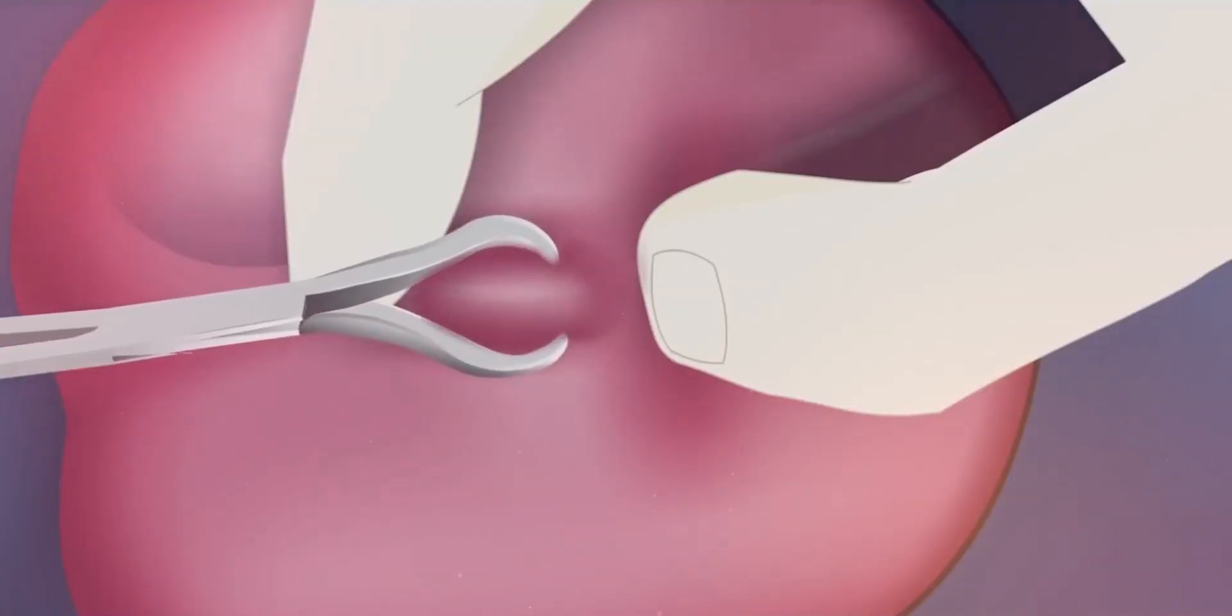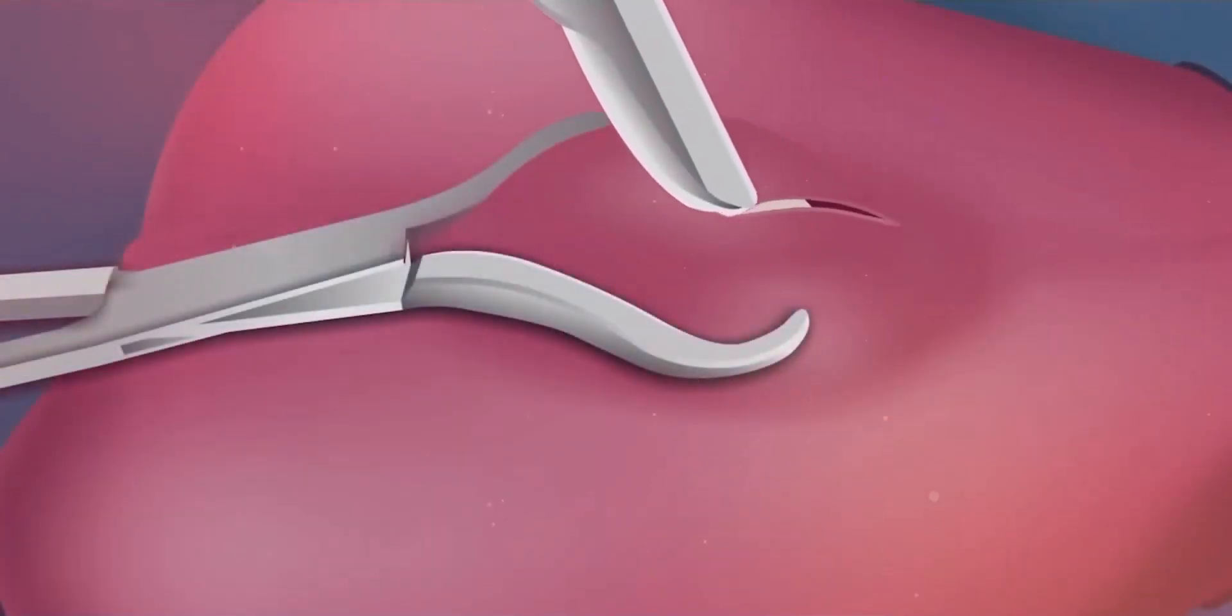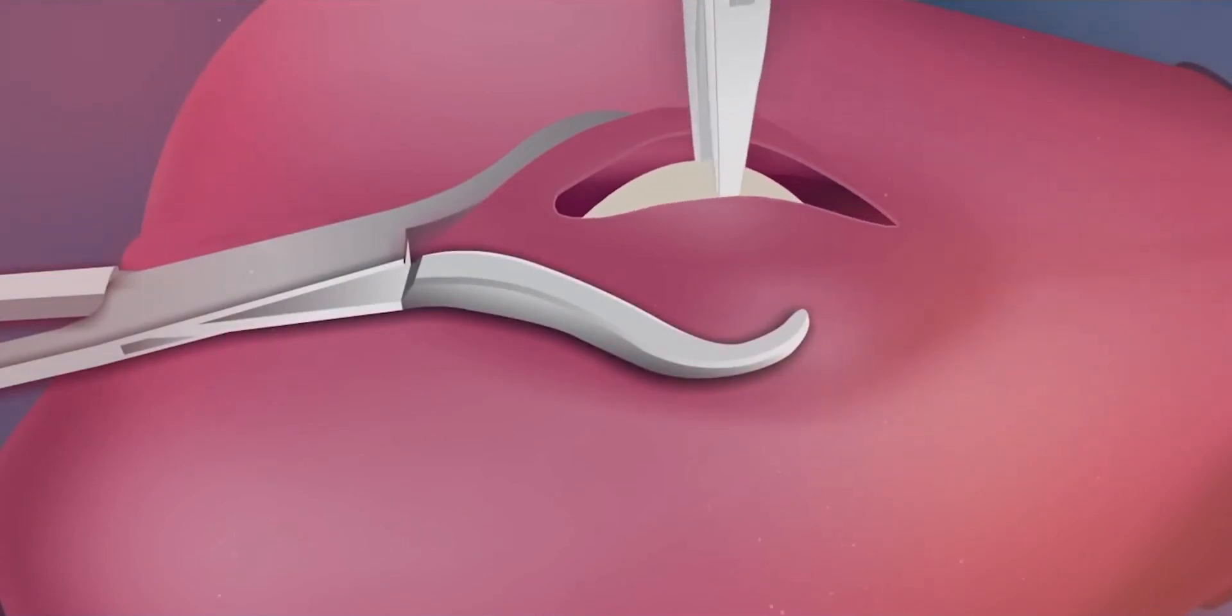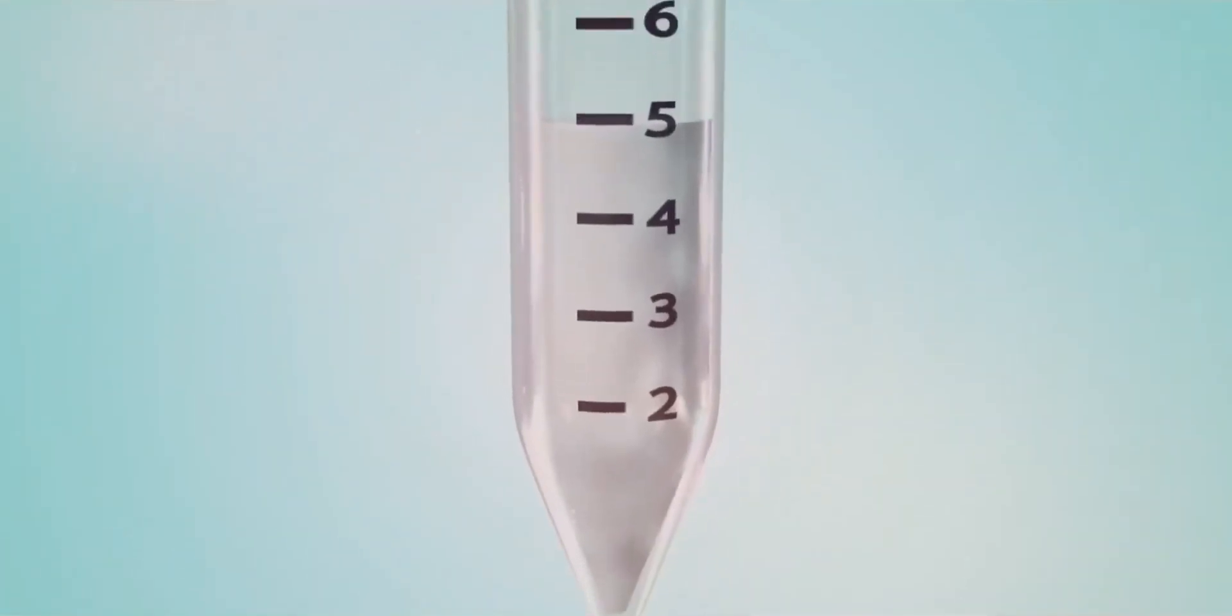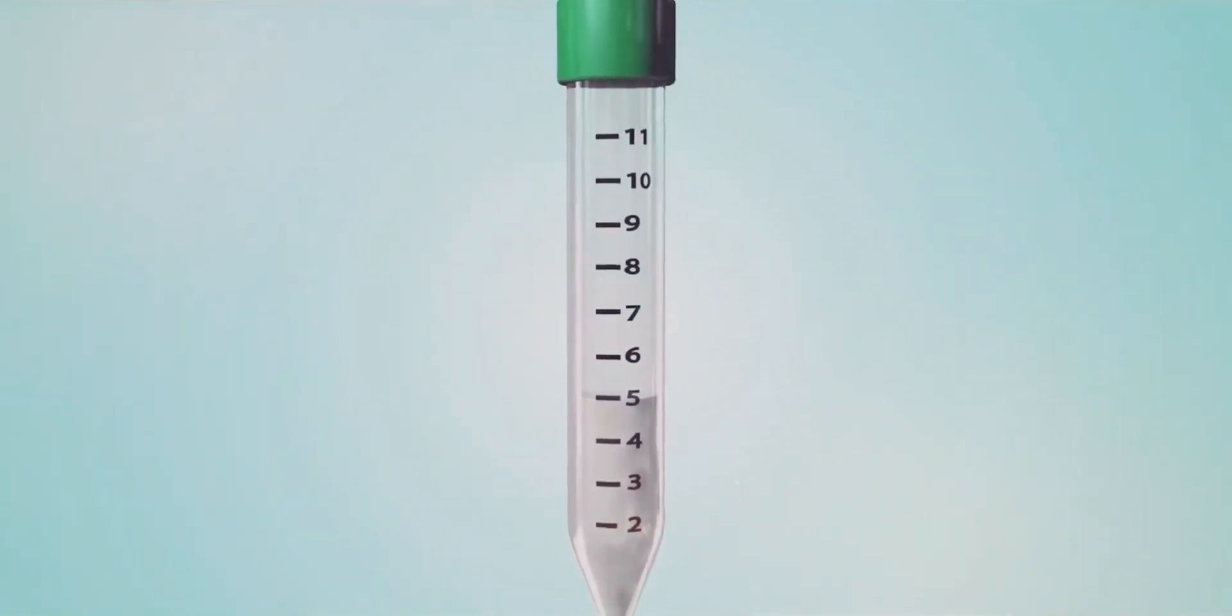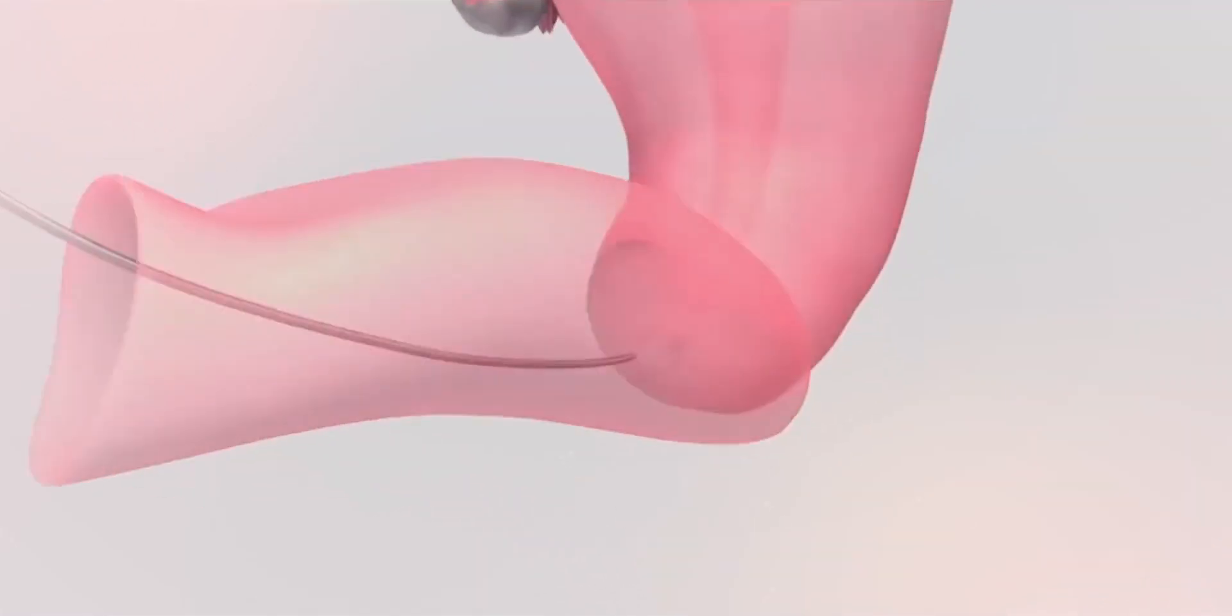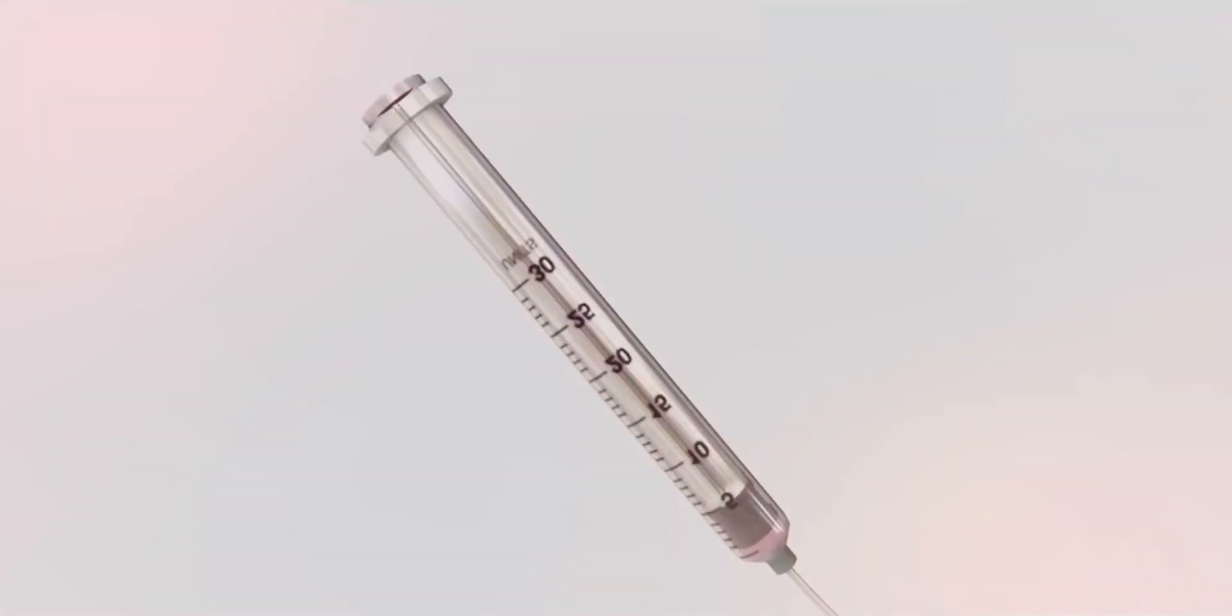While in the case of obstructive azuspermia, the blockage is opened through surgery. Or if a tube is cut, it is attached to it. And if all this is not possible, then by extracting sperms from the testis of such patients, fertilization can be achieved through the test tube.